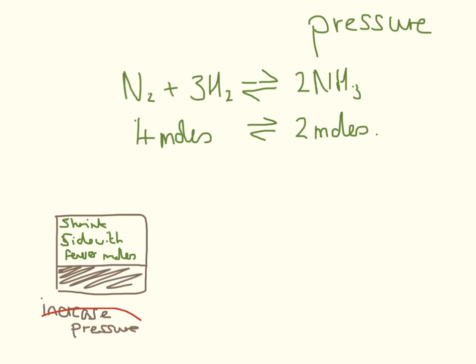So on this side, we have four things, and on this side, we have two things. So an increase in pressure is going to shift the equilibrium to this side because two things take up less space than four things.